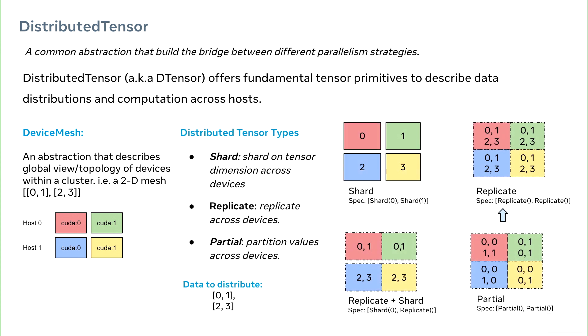The second concept is the D-tensor placement types. There are three placement types: Shard, where we shard on tensor dimension across devices; Replicate, where we replicate tensor across devices; Partial, where we partition values across devices.